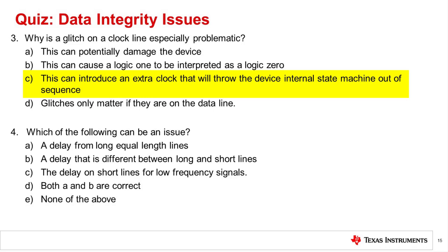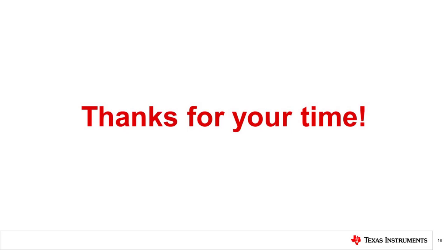Question 4. Which of the following can be an issue? The correct answer is D. Both A and B are correct. A delay in long equal lines can be a problem as the received data can be out of synchronization with the transmitter clock. Also, if the delay is different between two associated signals, because two lines are of different lengths, the digital signals can be out of synchronization with each other. This problem mainly occurs on long lines or high frequency systems. That's all for today's video. Thanks for watching.